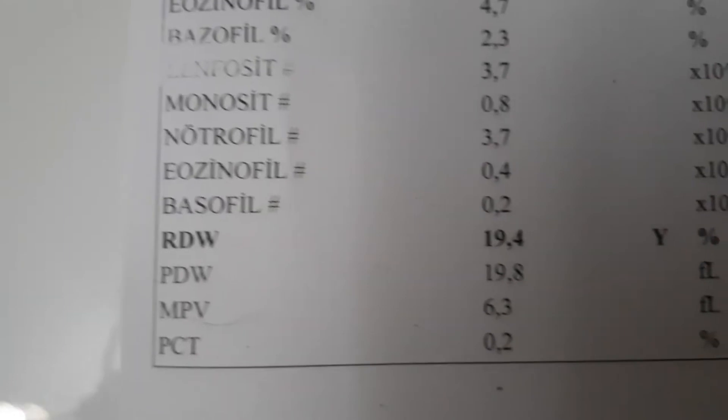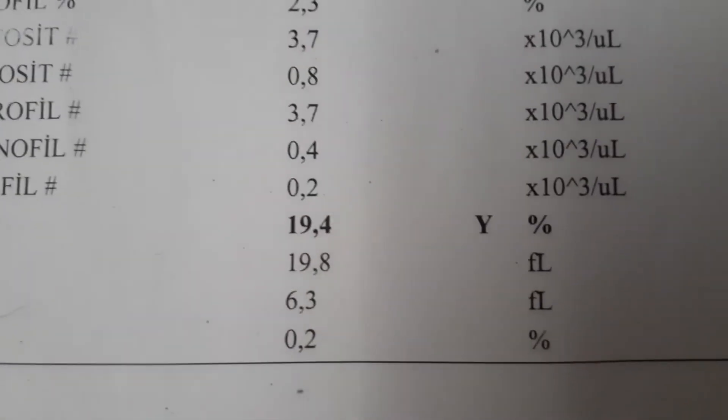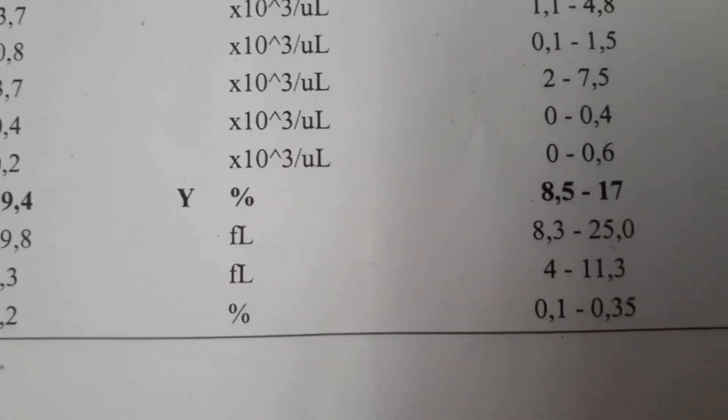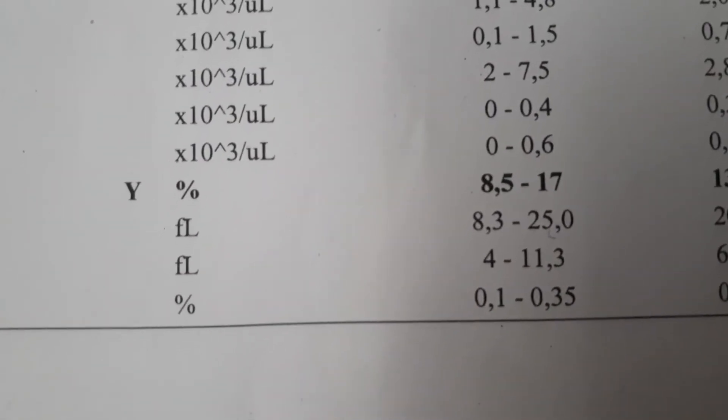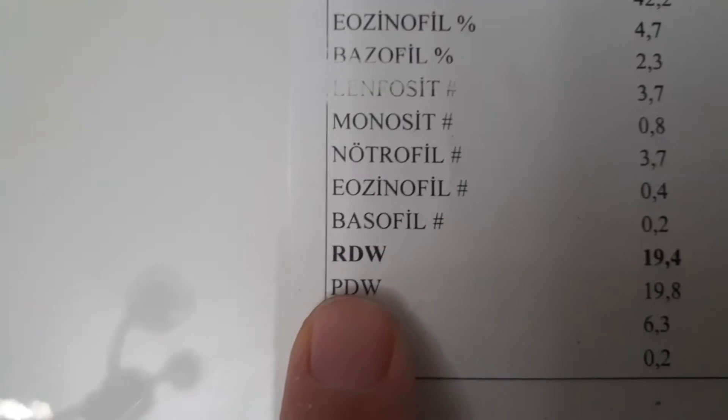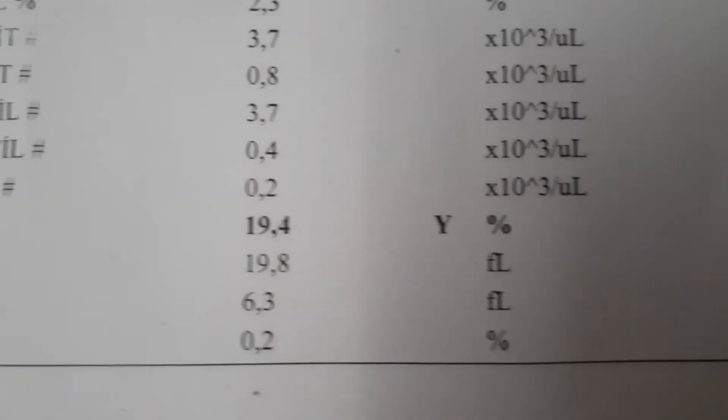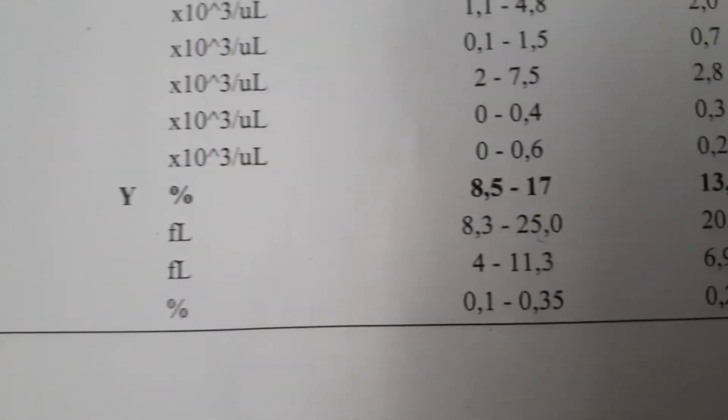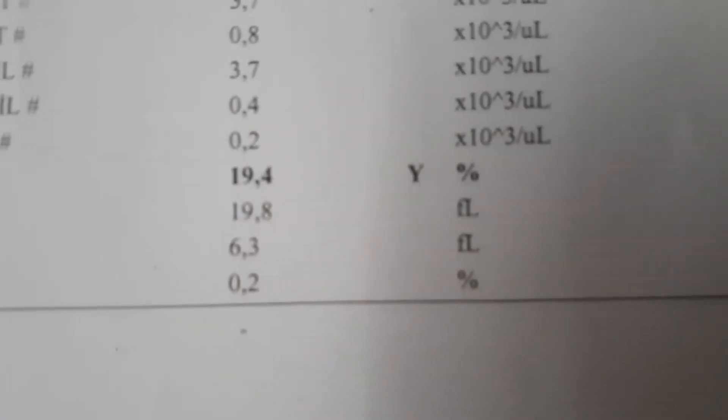MPV stands for mean platelet volume — a high value indicates larger diameter platelets. This is not a very important test if the platelet count is normal. MPV elevation can be seen in some cancers, hyperthyroidism, heart diseases, diabetes, vitamin D deficiency, hypertension, and heart rhythm disorders. MPV decreases in intestinal diseases such as ulcerative colitis and Crohn's, chemotherapy, and aplastic anemia.